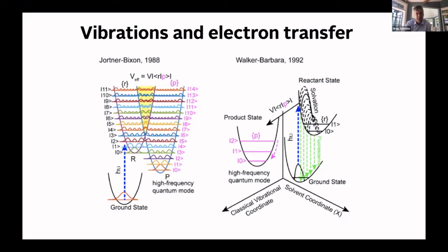I'll talk about when and if vibrations can play a role as a reaction coordinate. This was studied in the 1980s in particular by Jortner and Bixen, who came up with predictive ways of thinking about the role of these high frequency modes. Typically, the ladder of vibrational levels changes the free energy relationships for electron transfer reactions. The involvement of high frequency vibrations can speed up certain electron transfer reactions by orders of magnitude compared with predictions made without these modes — work done by Gilbert Walker and Paul Barbara.